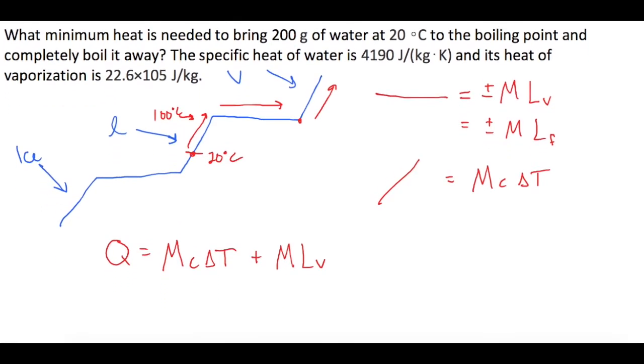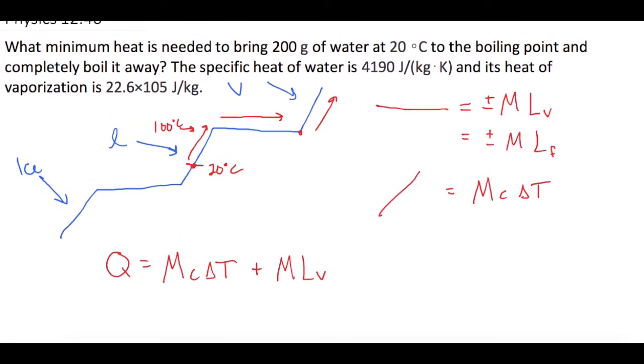So now we can just plug everything in. So Q is equal to the mass of the water, we say, is 200 grams, which is 0.2 kilograms, times the specific heat. They tell us in the question is 4190.